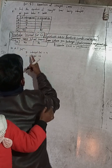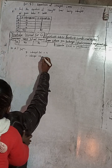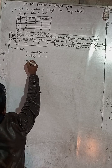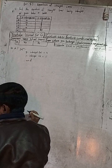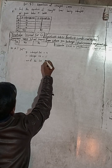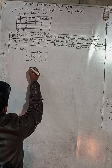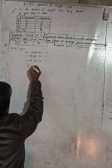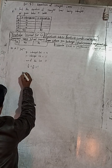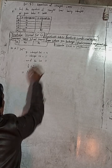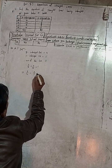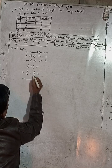X-intercept A is equal to 4, and B intercept is given as 5. Therefore, the equation of the line is x/a + y/b = 1. In place of A, put 4, and in place of B, put 5, so it becomes x/4 + y/5 = 1. Here we have 5 and 4, so LCM is 20.